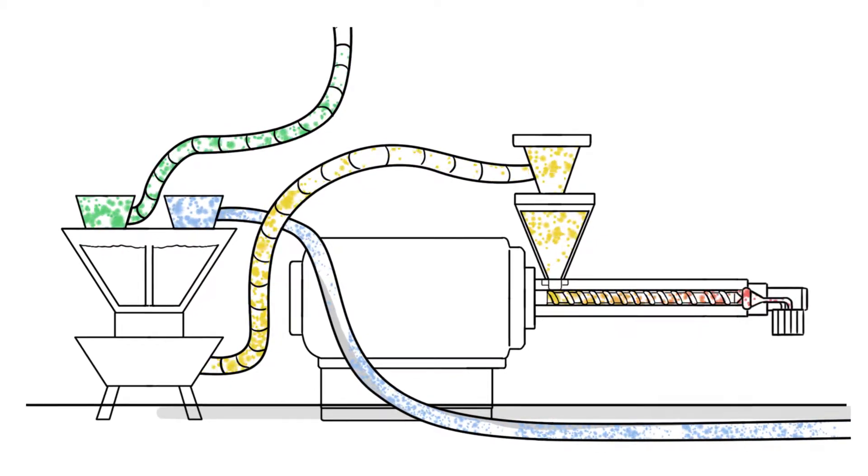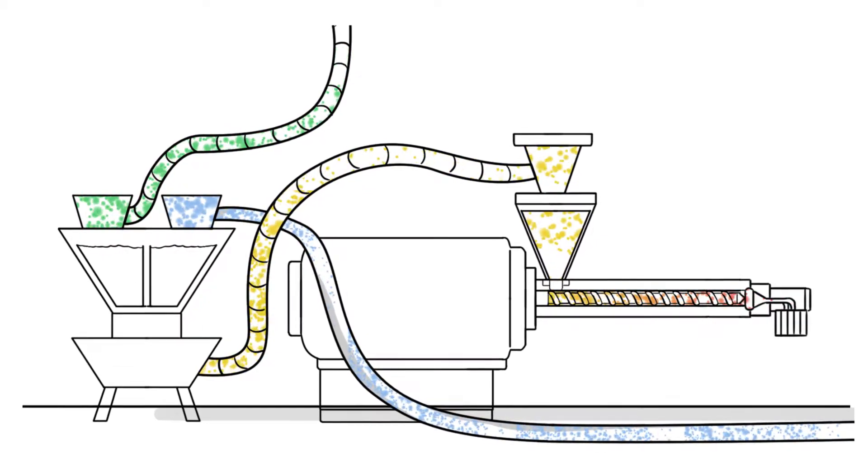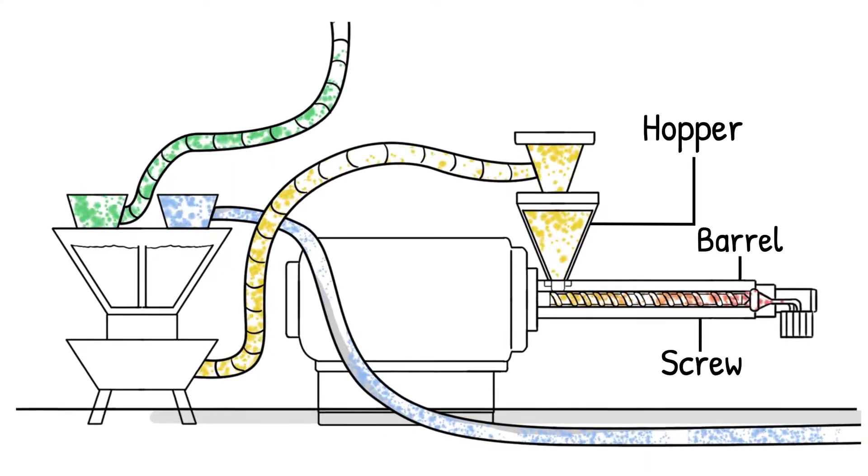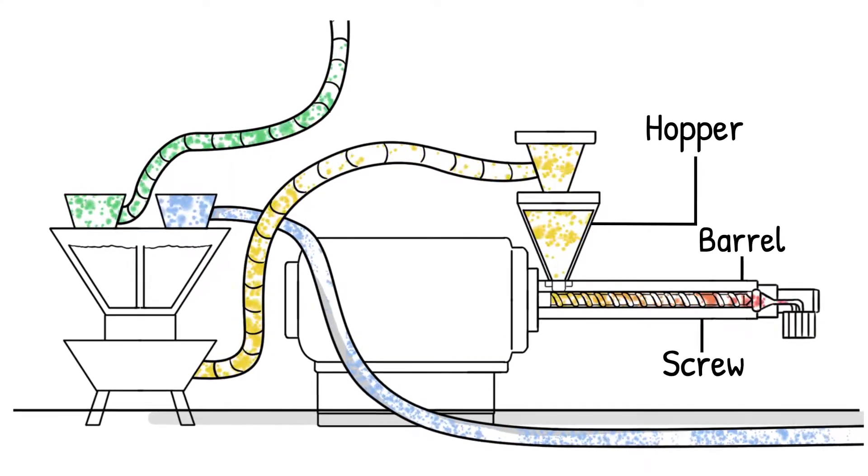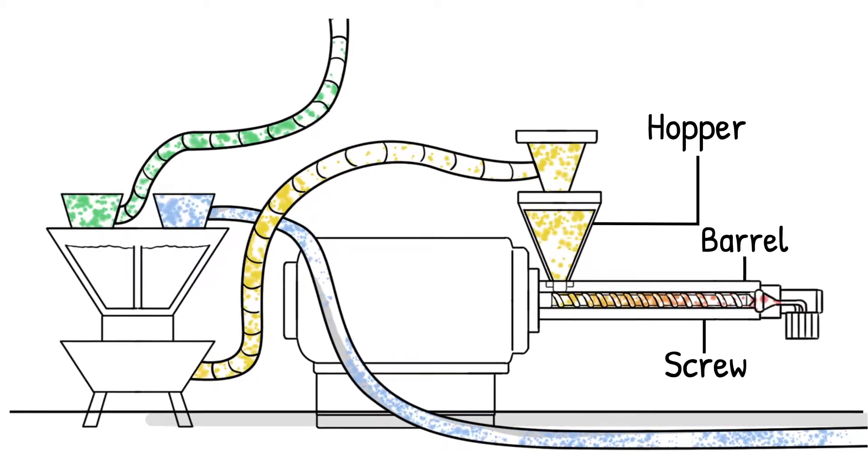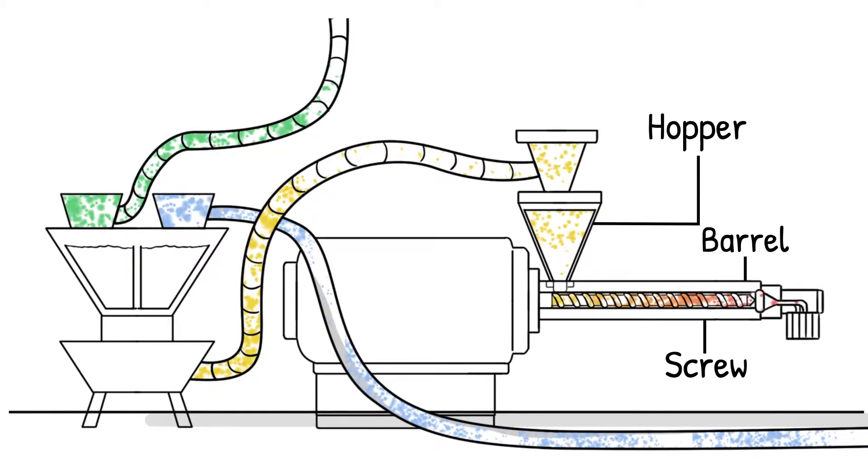After blending, the material is fed into a heated barrel with a continuously turning screw. The screw and barrel are critically important for getting a good parison to form. The material is moved down the barrel where a combination of heat and mechanical friction turn the plastic into molten state.